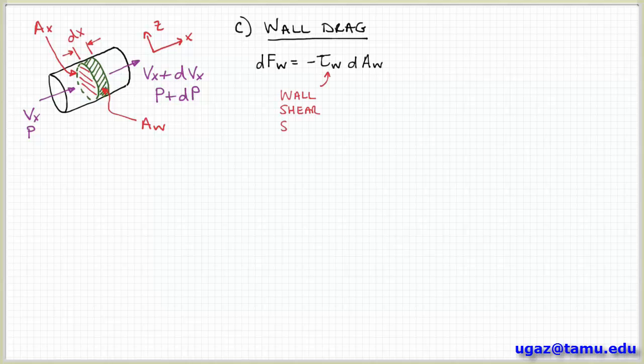So τ_wall represents the wall drag or the wall shear stress. And then this dA represents the contact area. So we can get an expression for this contact area if we kind of take a look at this disk more closely.